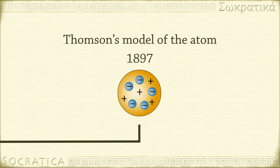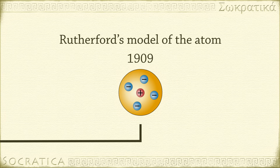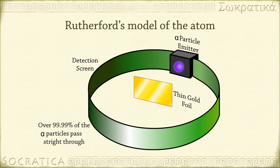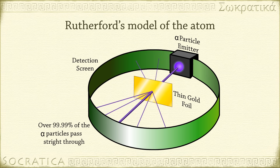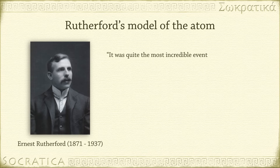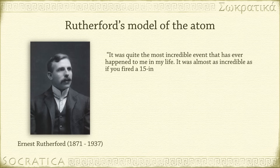The Thomson model stood for about a decade until the work of Ernest Rutherford. Rutherford and colleagues, in an experiment performed in 1909, found that a beam of alpha particles — that's a kind of positively charged radiation — shot at a target of very thin gold foil mostly passed straight through to a detector behind the foil. But occasionally, a particle would be violently deflected back, as if it had hit something massive. As Rutherford said, it was quite the most incredible event that has ever happened to me in my life. It was almost as incredible as if you fired a 15-inch shell at a piece of tissue paper and it came back and hit you.